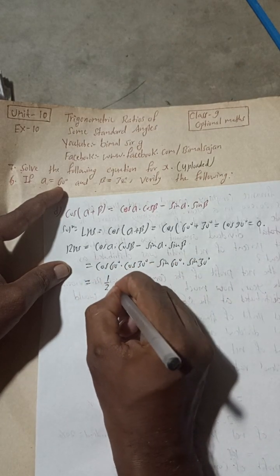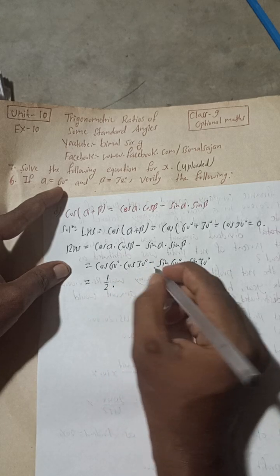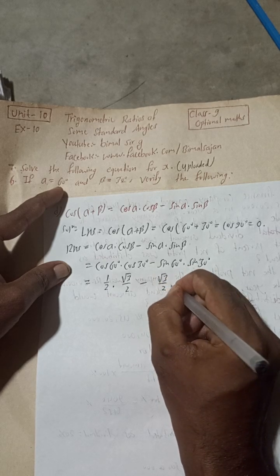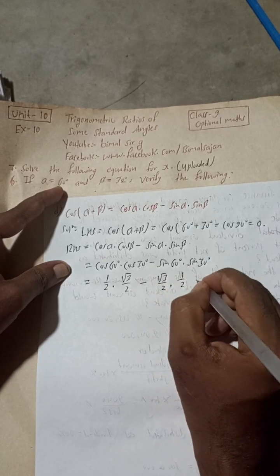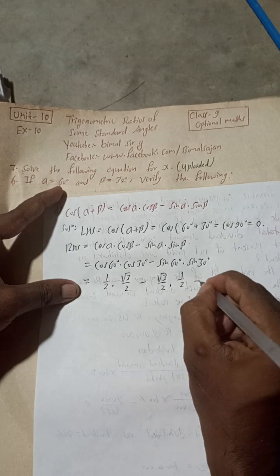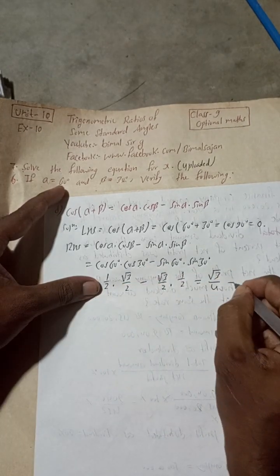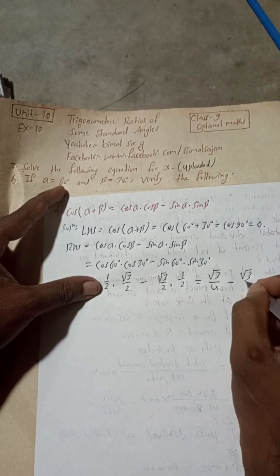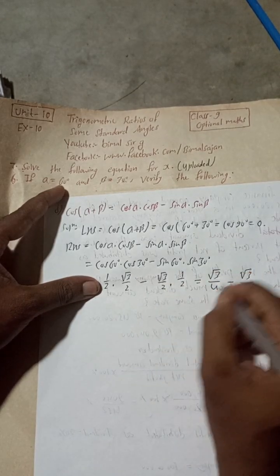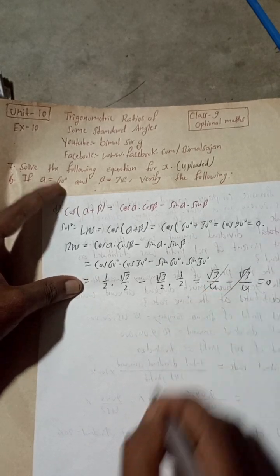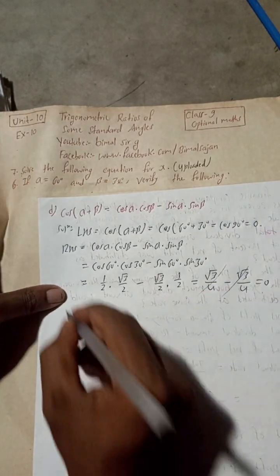Cos 60 degrees is 1/2 times cos 30 which is root 3/2, minus sin 60 which is root 3/2 times sin 30 which is 1/2. This equals root 3/4 minus root 3/4. These are the same, so they cancel and we get 0.